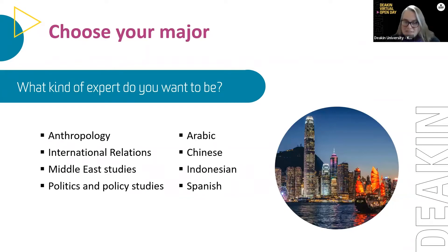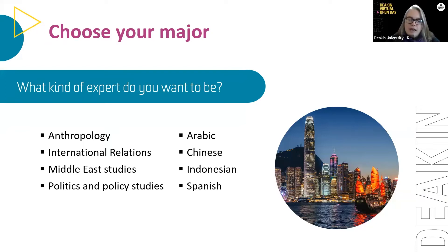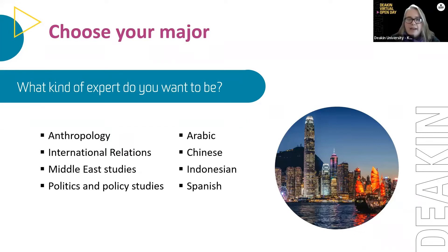In the Bachelor of International Studies we have eight majors to select from, including anthropology, international relations, Middle East studies, politics and policy studies, and our languages: Arabic, Chinese, Indonesian and Spanish. Around 75% of students end up majoring in international relations. When selecting a major or minor sequence combination, consider selecting complementary sequences — for example, anthropology pairs really well with international relations.